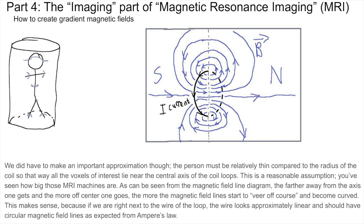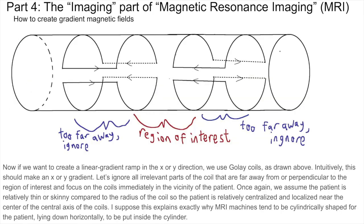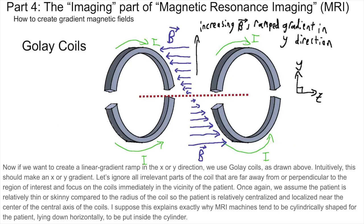You've seen how big those MRI machines are. As can be seen from the magnetic field line diagram, the farther away from the axis one gets and the more off-center one goes, the more the magnetic field lines start to veer off course and become curved. This makes sense because if we are right next to the wire of the loop, the wire looks approximately linear locally and we should have circular magnetic field lines as expected from Ampere's law. Now, if we want to create a linear gradient ramp in the X or Y direction, we use Golay coils as drawn above. Intuitively, this should make an X or Y gradient. Let's ignore all irrelevant parts of the coil far from the region of interest and focus on the coils immediately in the vicinity of the patient. We assume the patient is relatively thin compared to the radius of the coil so the patient is relatively localized near the central axis of the coils.